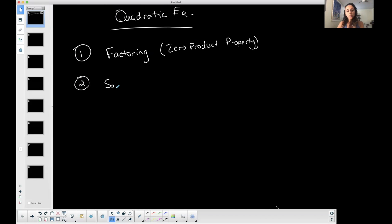The second method is called the square root property, and sometimes completing the square, which is not my favorite, but to each his own.